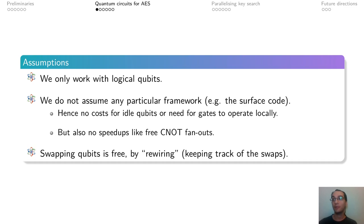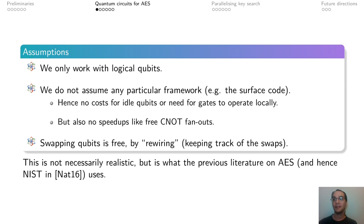Finally, we assume that swapping values between qubits can be done for free, by not swapping and rather keeping track of the swaps that should have happened. This is not necessarily a realistic model, but it's what the previous literature on Grover against AES had used, and hence also what implicitly NIST was using.